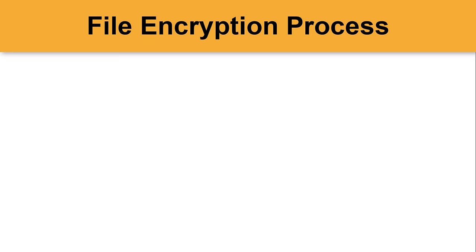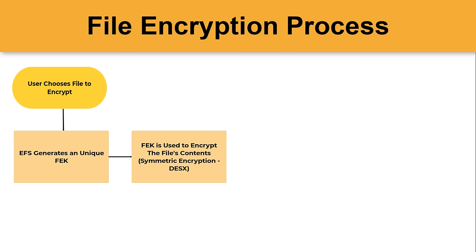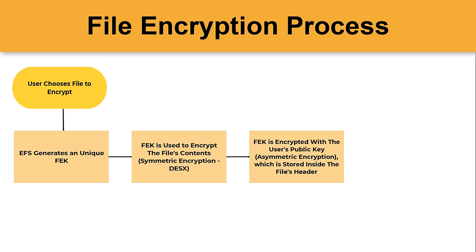When a user chooses to encrypt a file or folder, Encrypting File System generates a unique File Encryption Key (FEK), which is then used to encrypt the file's contents with a symmetric encryption algorithm called DESX. This FEK is then encrypted with the user's public key and stored inside the file's header. The user's public key is stored on the user's computer.